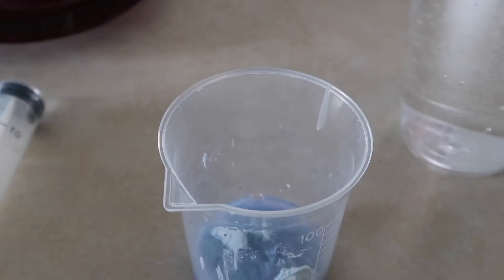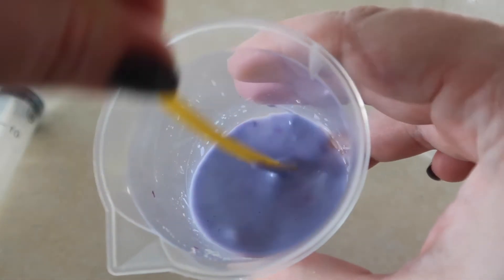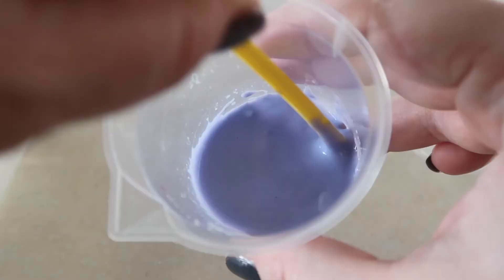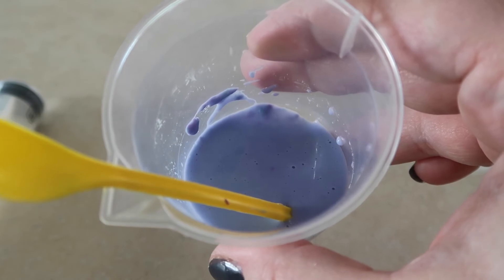Stir the ingredients with a stirring stick until your mixture is smooth. Next, draw the new mixture into the syringe.